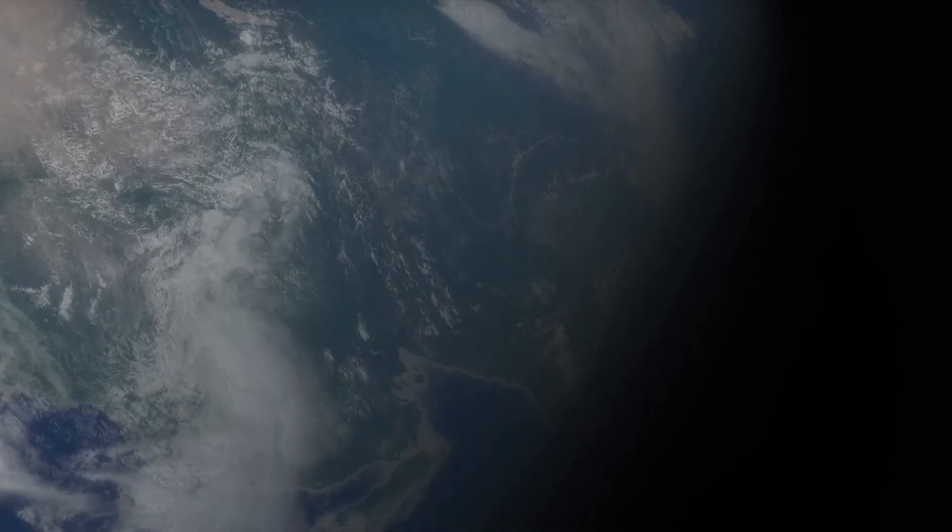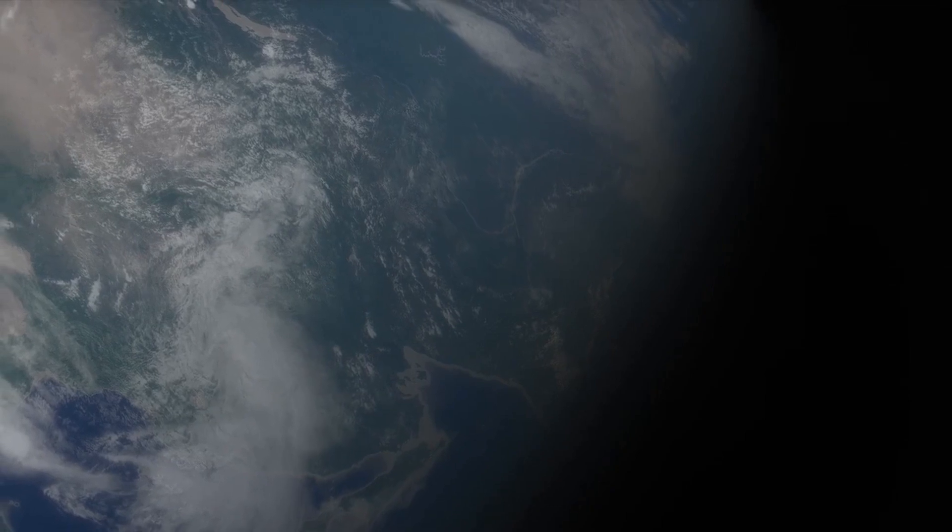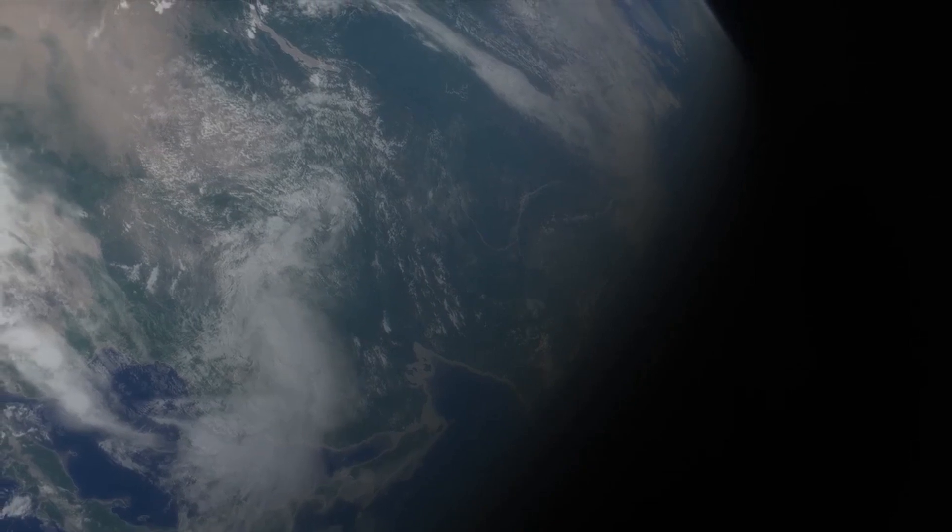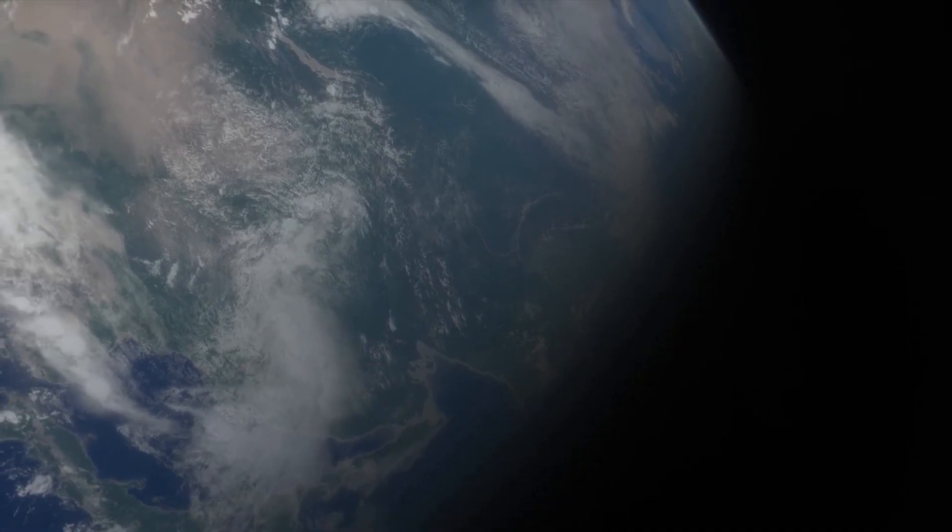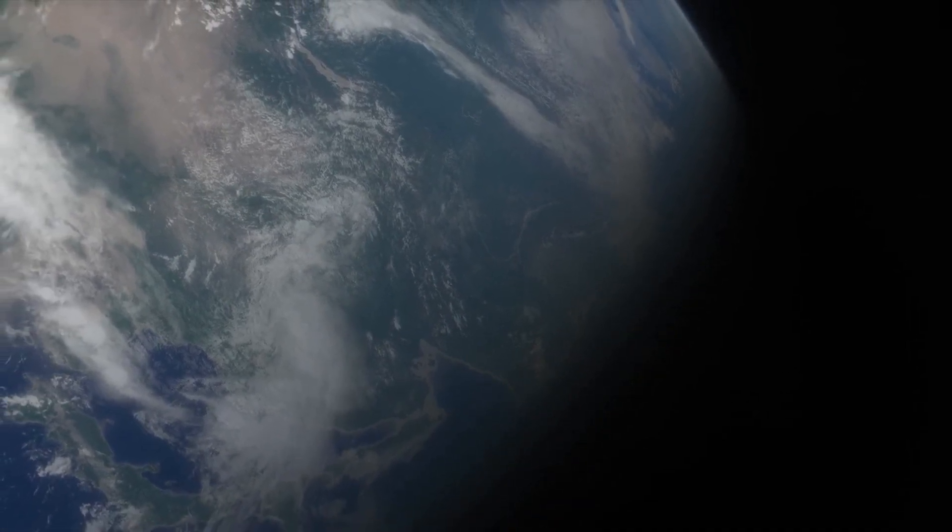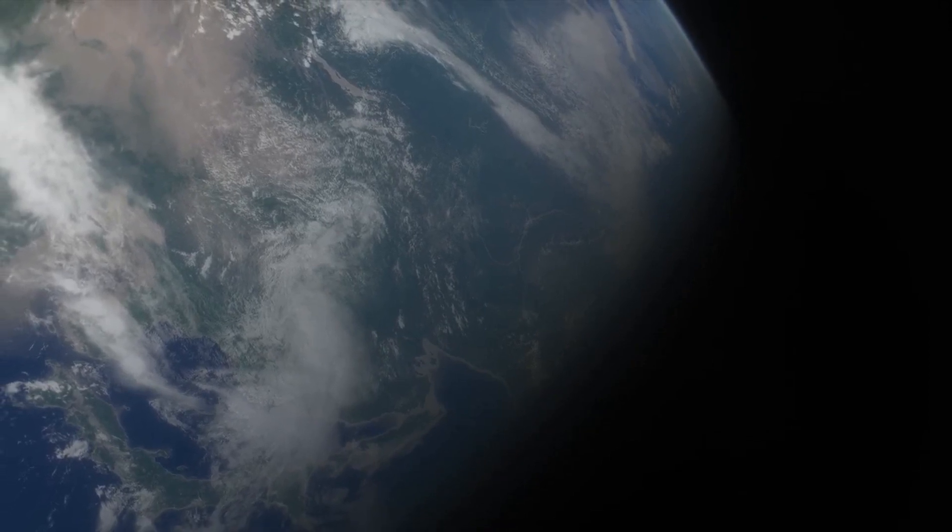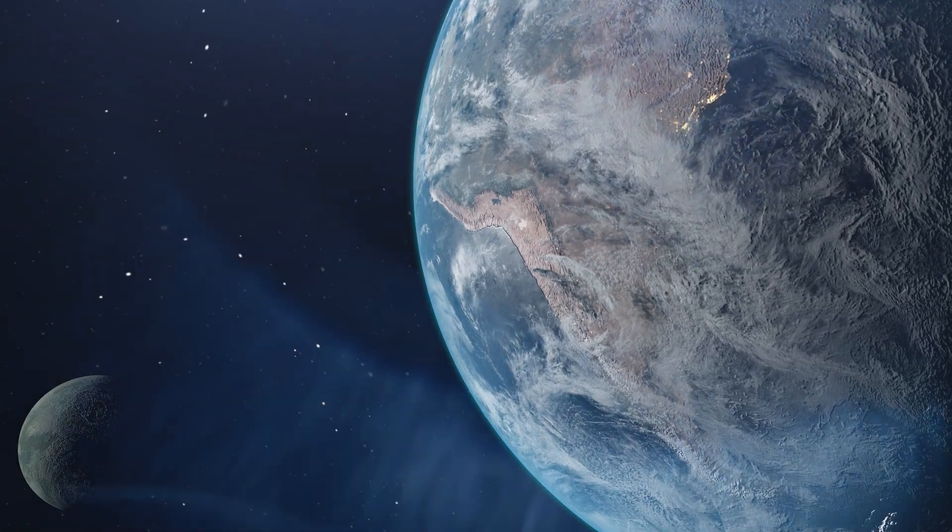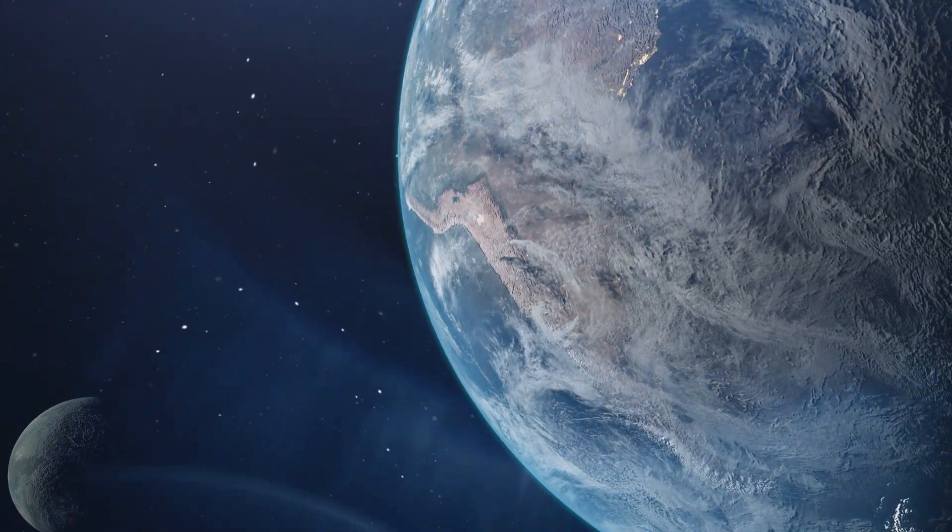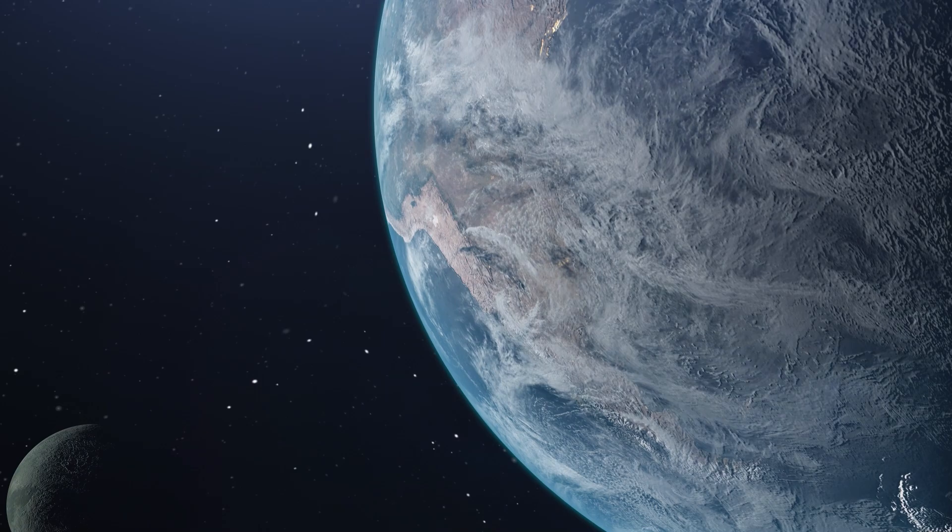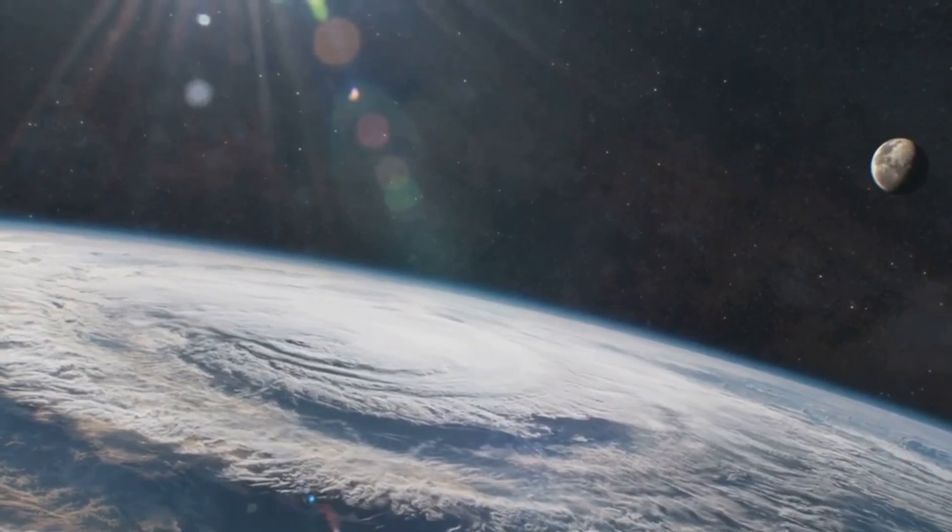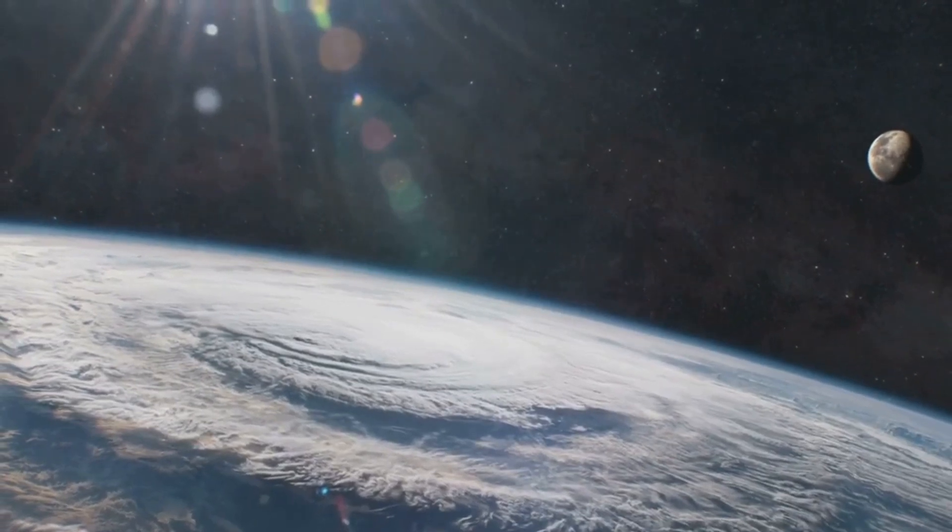For one, the Moon's gravitational pull generates the ebb and flow of the ocean tides. This lunar influence helps to circulate warm and cold ocean currents, which in turn affects the climate and weather patterns around the globe. But the Moon's significance doesn't end there. Its presence also contributes to stabilizing the Earth's axial tilt, ensuring a relatively stable climate, which has been essential for life to flourish.